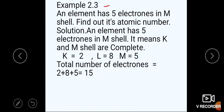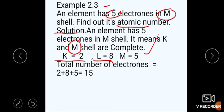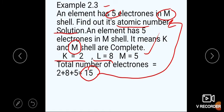Next, Example 2.3: An element has five electrons in M shell — find out its atomic number. Solution: اگر M shell میں 5 electrons ہیں تو ظاہر ہے K اور L shells complete ہوں گی۔ K accommodate کرتا ہے 2، L accommodate کرتا ہے 8، اور M میں 5 ہیں — total = 2+8+5 = 15۔ تو اس element کا atomic number 15 ہے۔ یہ examination point of view سے بھی بہت important example ہے۔